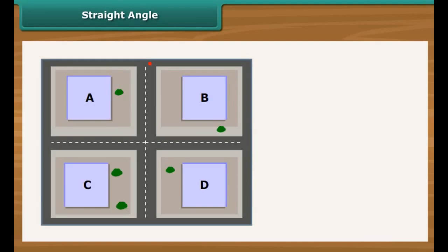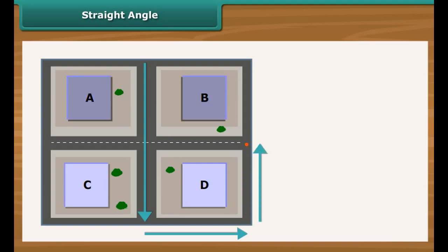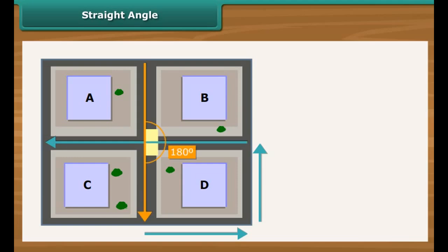Straight angle: In the second route, Rajiv jogs from pocket A to pocket C, turns left, jogs to pocket D, turns left again, jogs halfway towards pocket B, turns left once more, and jogs to pocket A. When Rajiv jogs from pocket A to pocket C he covers 2 right angles — in other words, he covers a straight angle of 180 degrees. He covers another straight angle when he jogs from pocket B to pocket A.